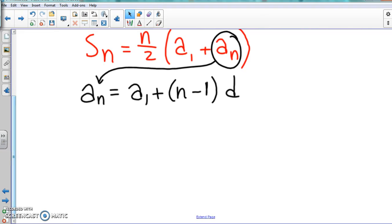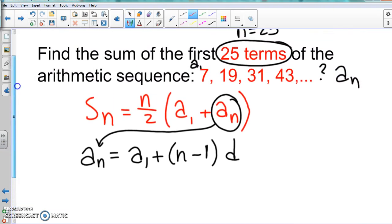So we're going to have to find a_n using this formula. a_n - we don't know what that is at all, but we do know n equals 25, we know a_1 is 7, and we should be able to figure out the common difference.